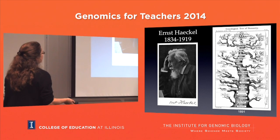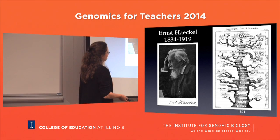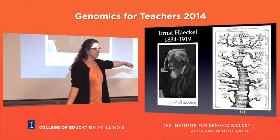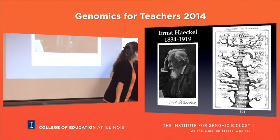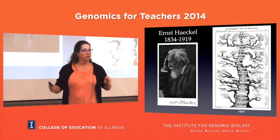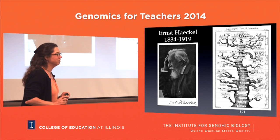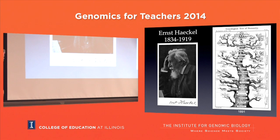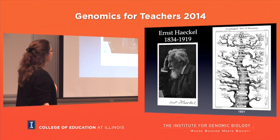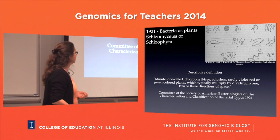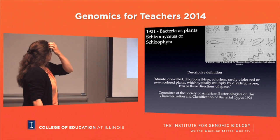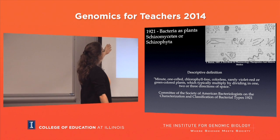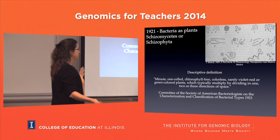Going forward, there was this idea of a tree of life starting to come around. Where are the microbes on this picture? Right here at the very bottom - Monera. We have no idea, but they're simple single cells so they must have been first. And of course man is at the very top, the most evolved organism on the planet, and everything else is coming from that.